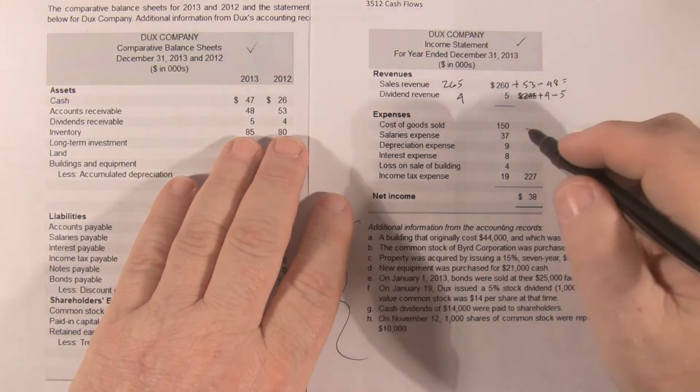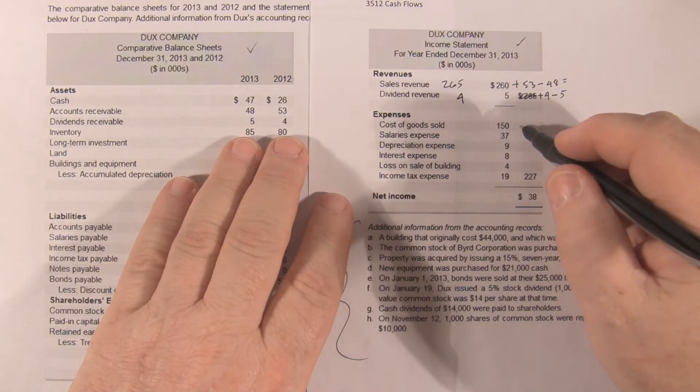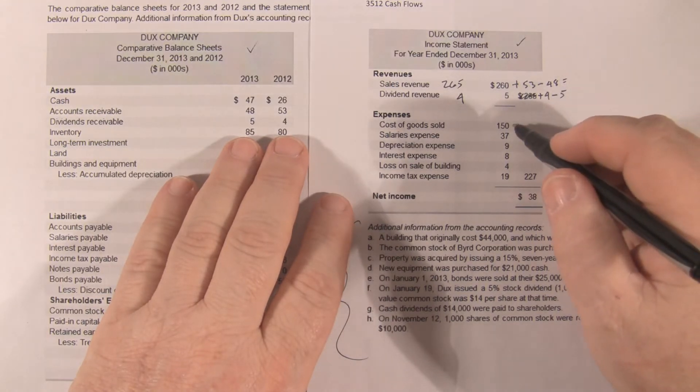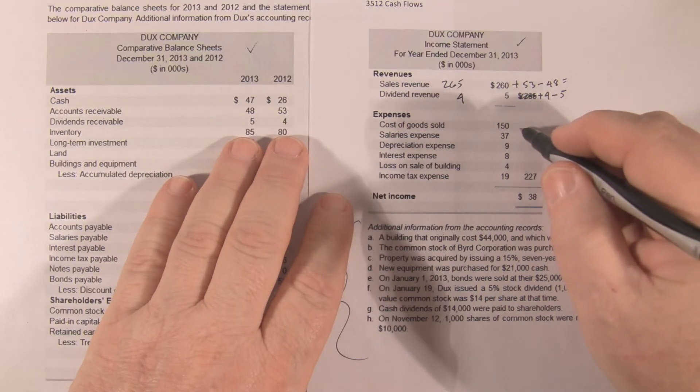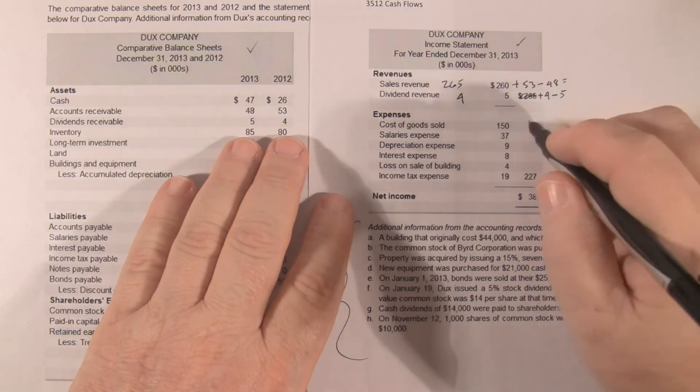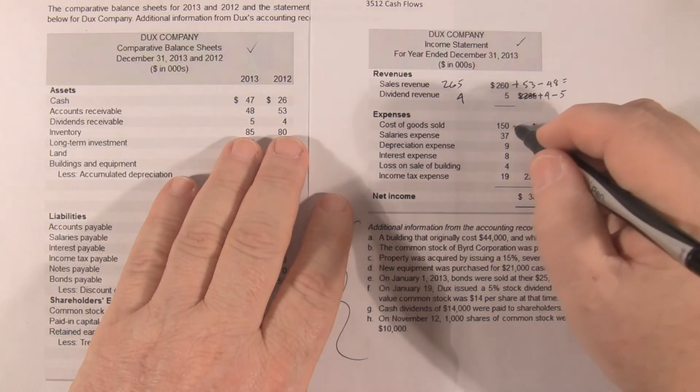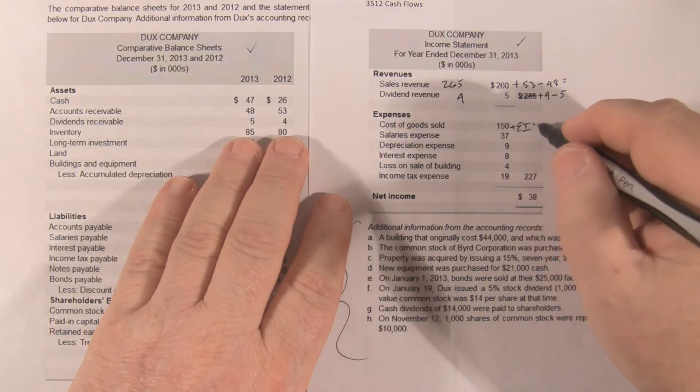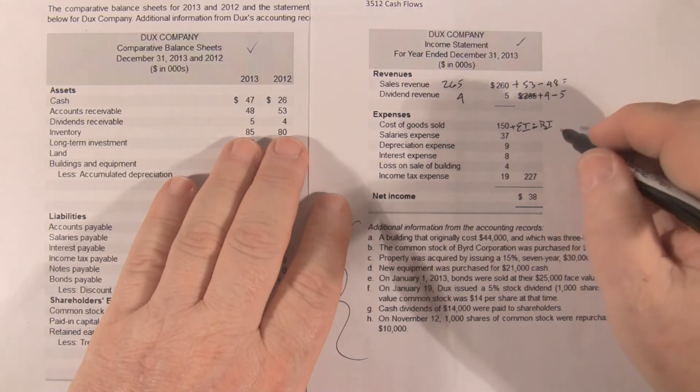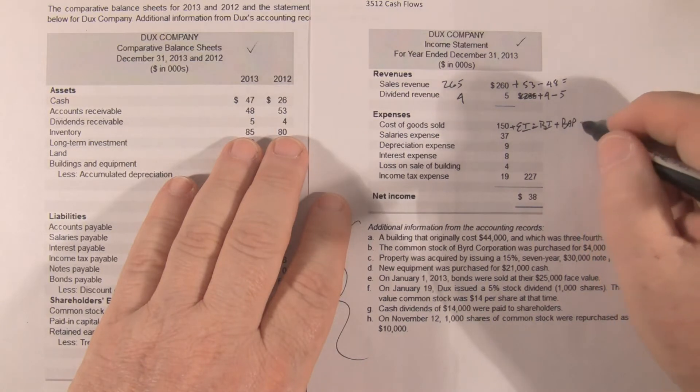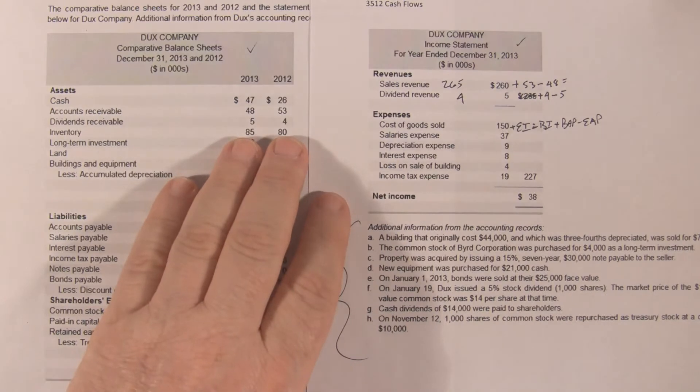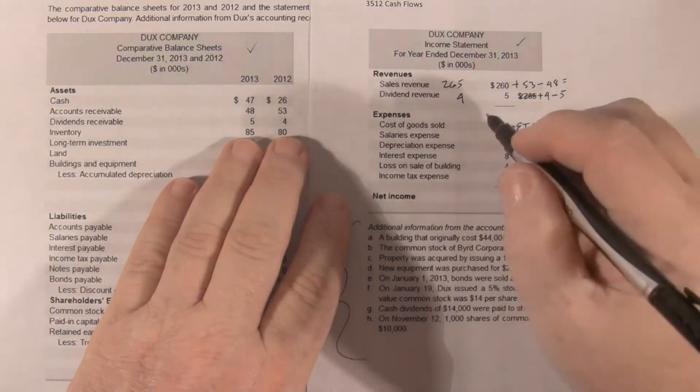Our cost of goods sold goes to our cash paid to suppliers. So we have cost of goods sold, plus ending inventory, minus beginning inventory. So we have plus ending inventory, minus beginning inventory, plus beginning AP, minus ending AP. And when we put that together, that comes out to 166.